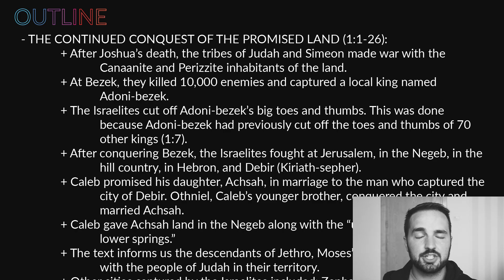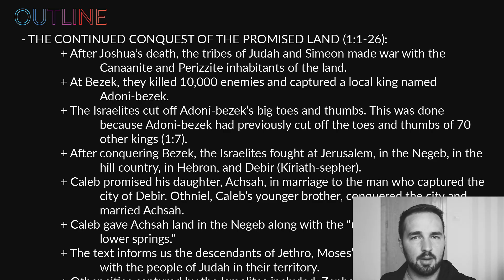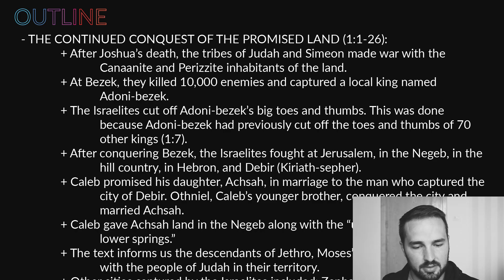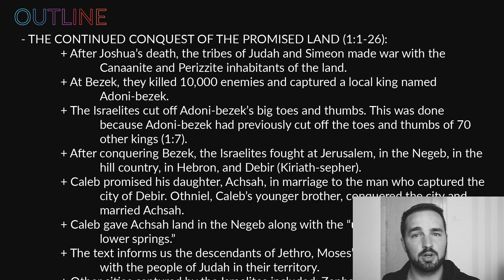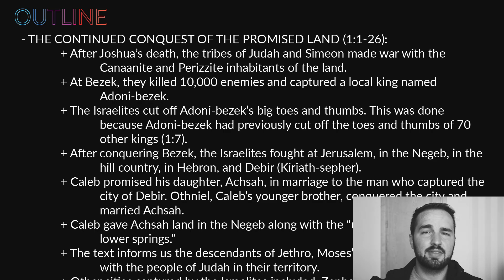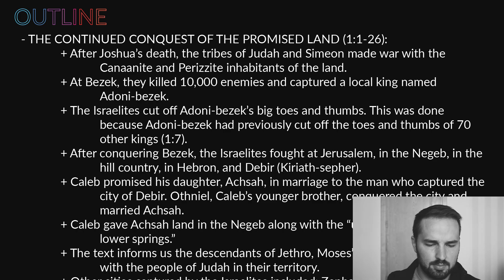Now for our outline, verses one through 26 — the first part covers the continued conquest of the promised land, kind of wrapping up the story of Israel taking this land from the pagan nations. After Joshua's death, the tribe of Judah and Simeon made war with the Canaanites and the Perizzites. At a place called Bezek, they killed 10,000 enemies and captured the local king, Adonibezek. They cut off his big toes and thumbs — not just for cruelty, but because Adonibezek, by his own admission, had done this to 70 other kings he had conquered. He got what he had previously dished out.